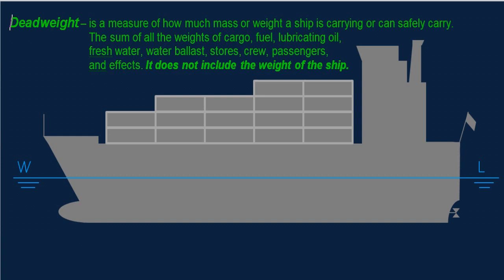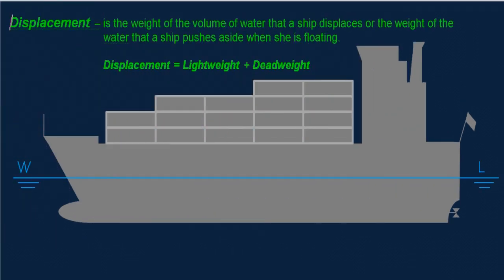Dead weight is a measure of how much mass or weight a ship is carrying or can safely carry. It is the sum of all the weights of cargo, fuel, lubricating oil, fresh water, water ballast, stores, crew, passengers, and other effects. Dead weight does not include the weight of the ship when she is empty — it is the sum of all weights put on board, including cargo.